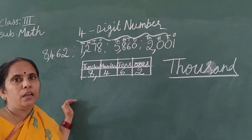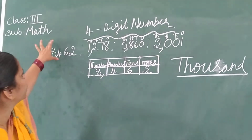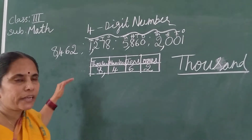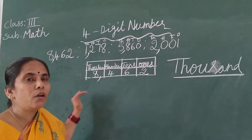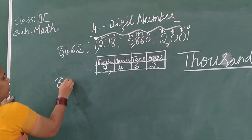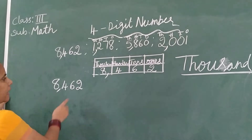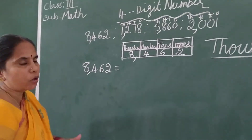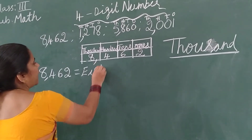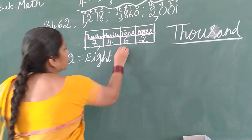Now we will learn how to write this number in words. Each number we will write in the place value chart and then write the number in words. We will take the number 8,462 — after 3 digits you put the comma. What are we saying? 8,000. So 8 — eight — is in which place? The 1000s place. So: Eight Thousand.